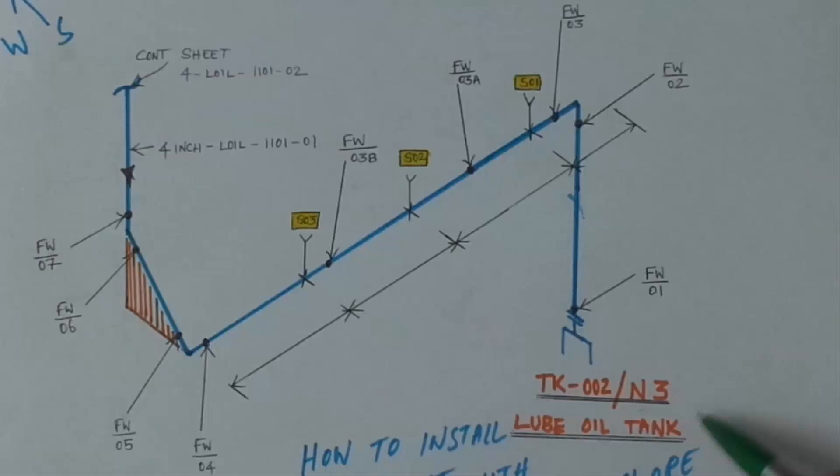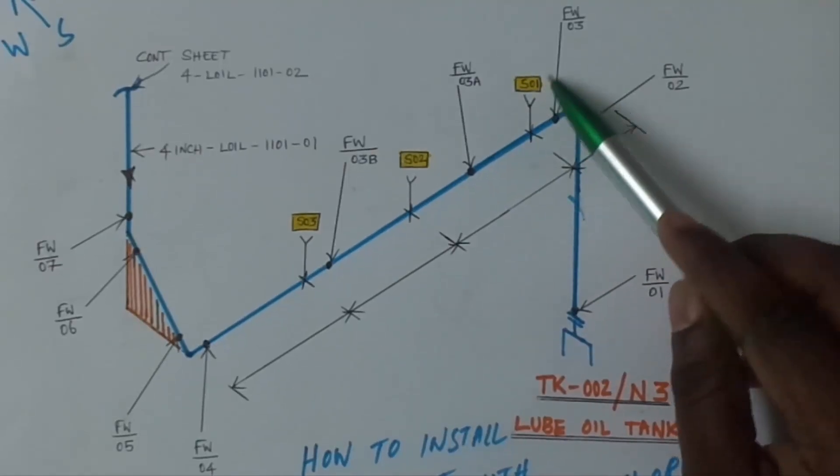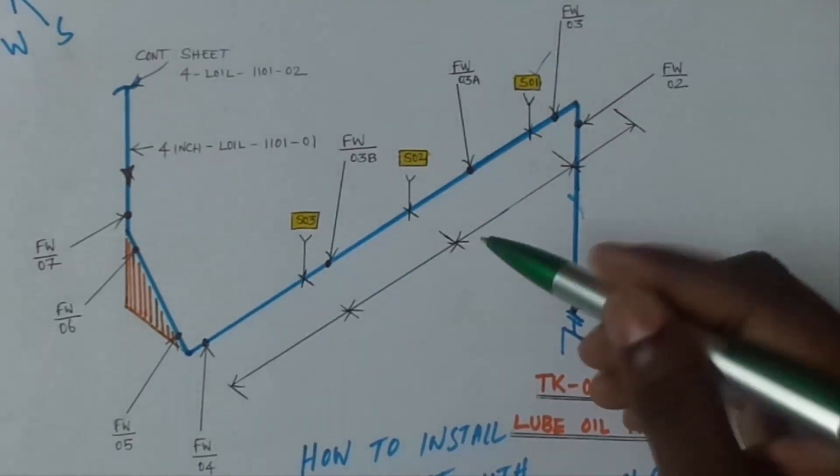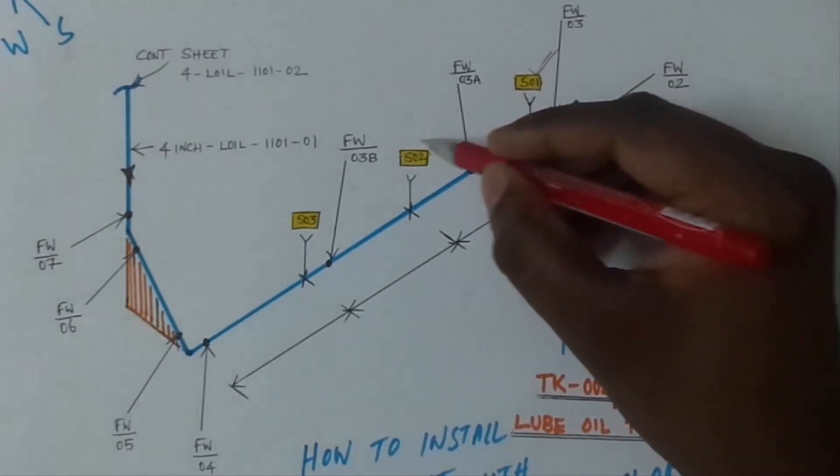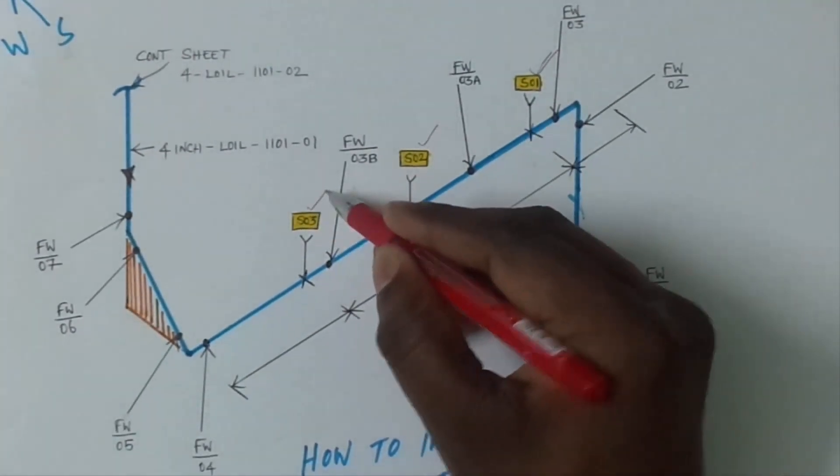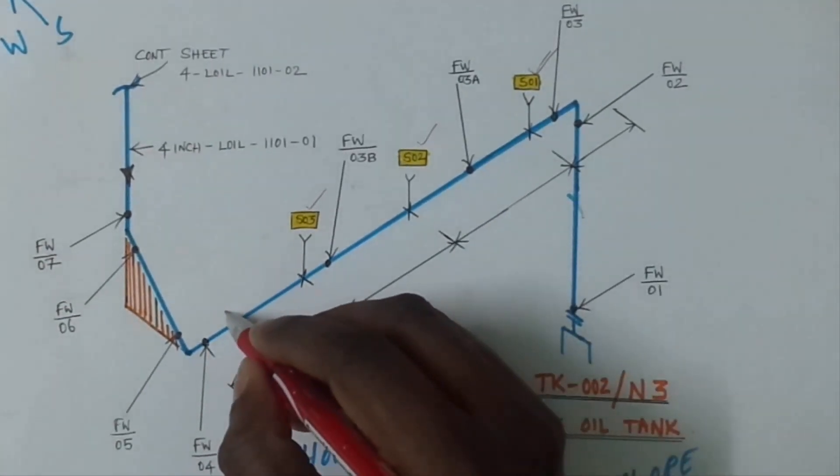So here support number 1, support number 2, and support number 3. This line they given slope means fall 1 is to 100.